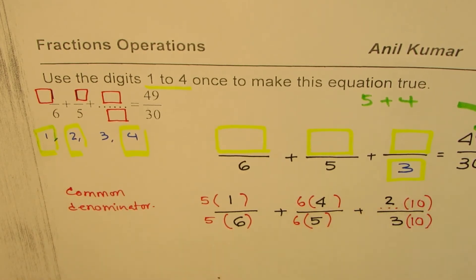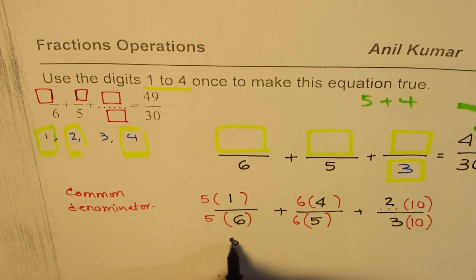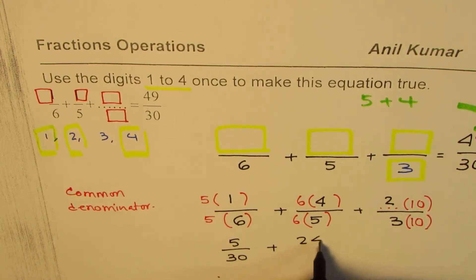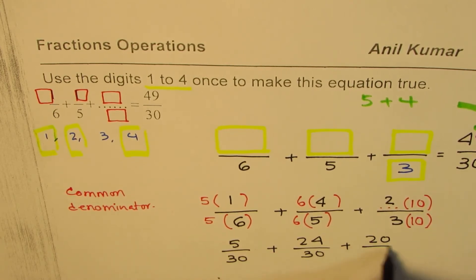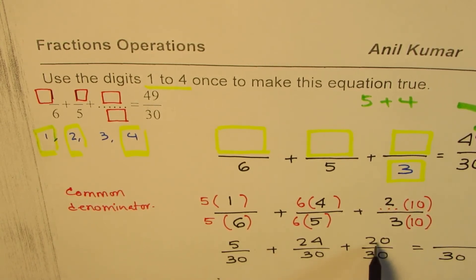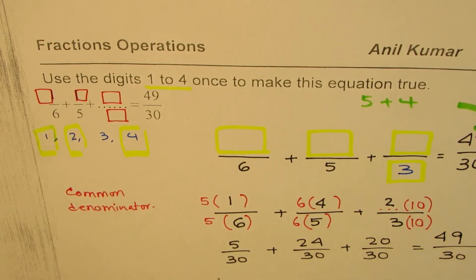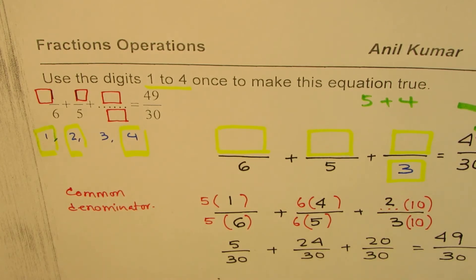So we have already got 24 and 5 which is 29. And once we have placed this we are left with 2. We can place 2 here and check our answer. So what do we see here? We have 5 over 30 plus 24 over 30 plus 20 over 30.